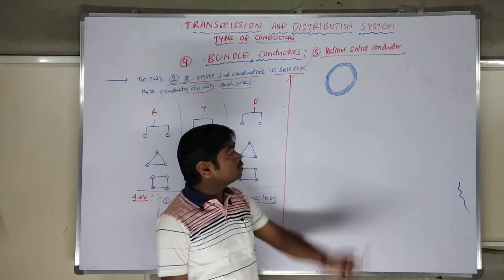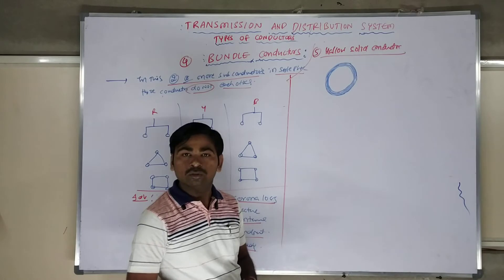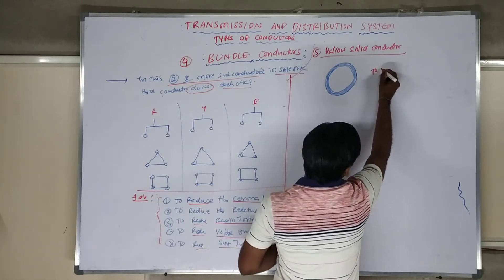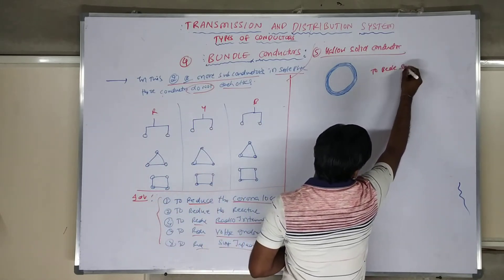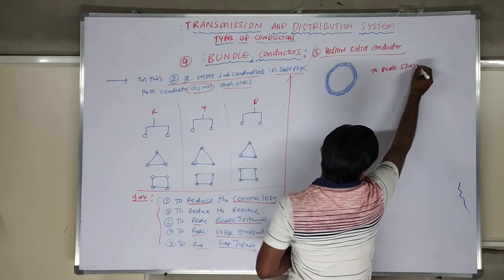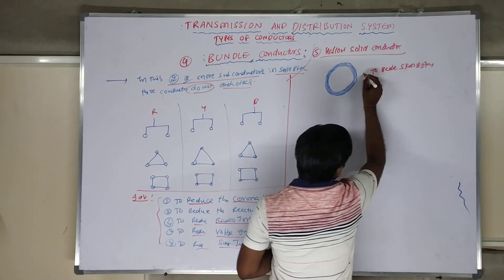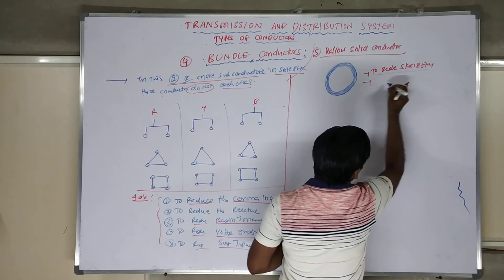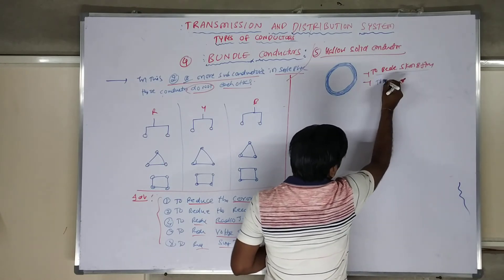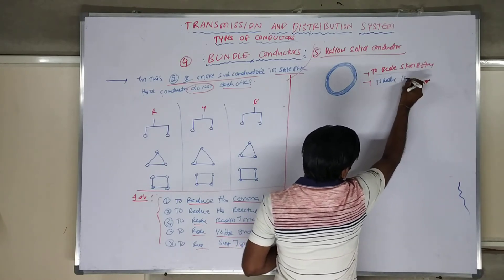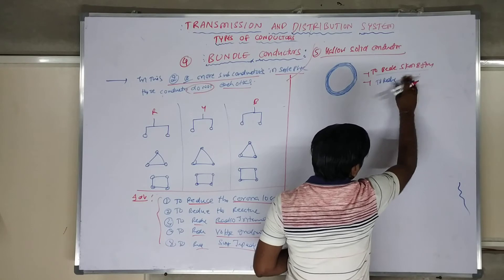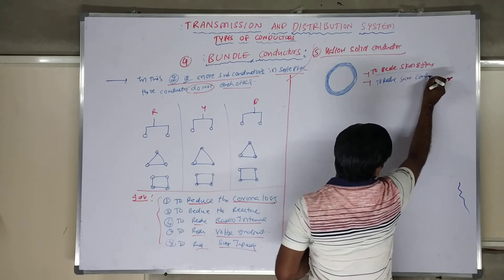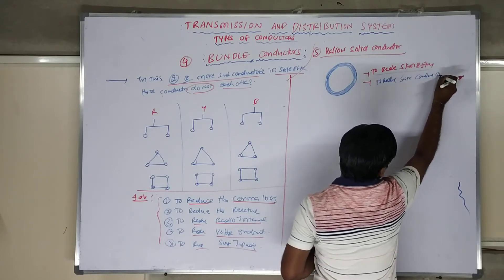Why should we use a hollow conductor? The reasons are: to reduce the skin effect, and to reduce — that is, to save — the conducting material. These are the two main advantages of using a hollow solid conductor.